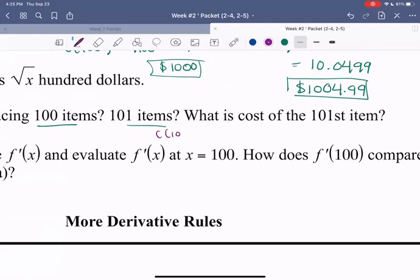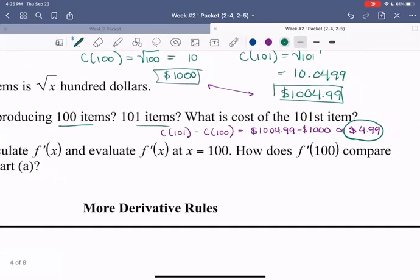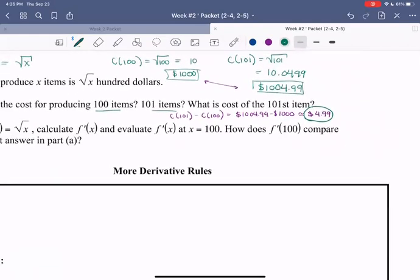Well, we'd say what's the cost of those 101 items minus the cost to produce the first 100? So that would mean subtracting these two numbers. So if we subtract those, 1,004.99 minus 1,000, we see that we get around 4.99. So what we just computed is the cost to produce that 101st item right after producing all of the previous 100. So this number that we just found, what we saw in our previous math 147, is our marginal cost.